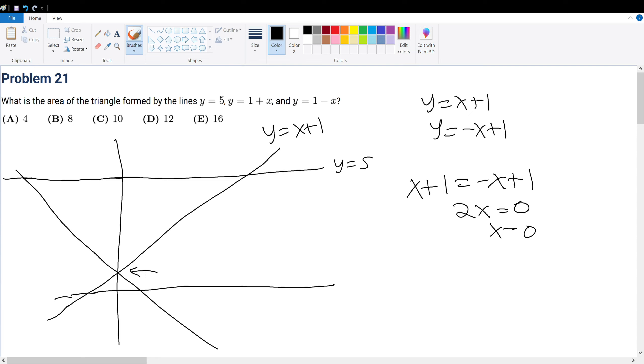What about this point? Well, that's when y = 5, so this must be (4, 5). And this point right here is when -x + 1 = 5, so that means x must equal -4. So this is (-4, 5).